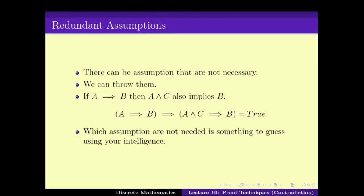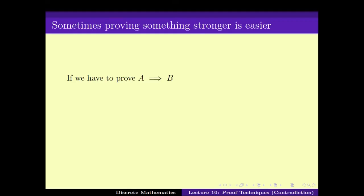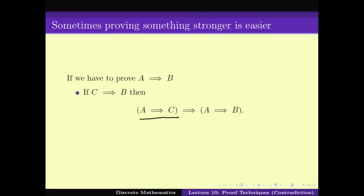The third trick that we learnt was that sometimes proving something harder can actually be easier. So if we have to prove A implies B, and if we can prove that A implies C, then A implies B follows. While it might seem harder to prove A implies C, if we can prove A implies C then we get A implies B. Sometimes this harder statement is easier to prove — proving the harder statement can actually be more helpful than solving the easier statement A implies B.